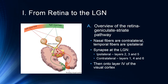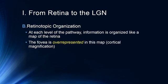From the LGN, projections go on to layer 4 of the primary visual cortex, and we'll talk more about that in our next segment. For now, we'll focus on the retina-LGN portion of the pathway. At each level of the pathway, information is organized like a map of the retina — cells respond to information from nearby cells in the retina, which of course are also representative of our visual field.